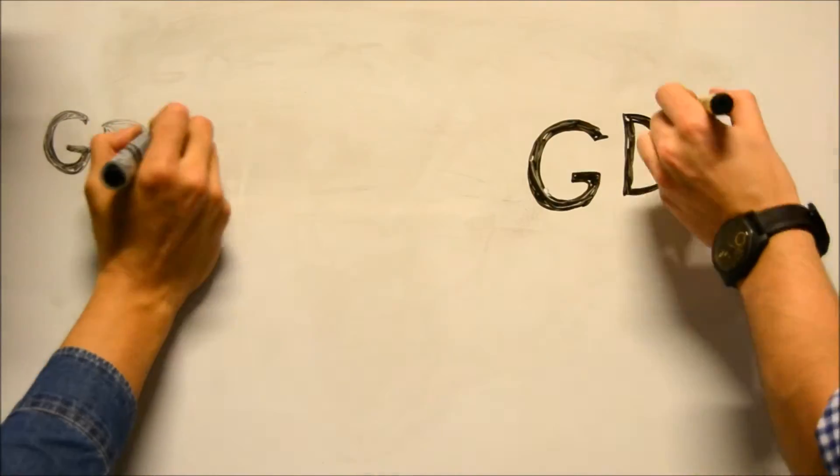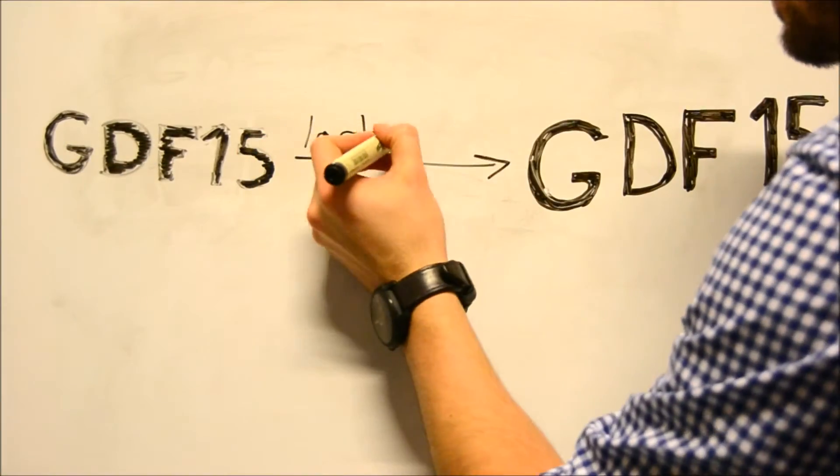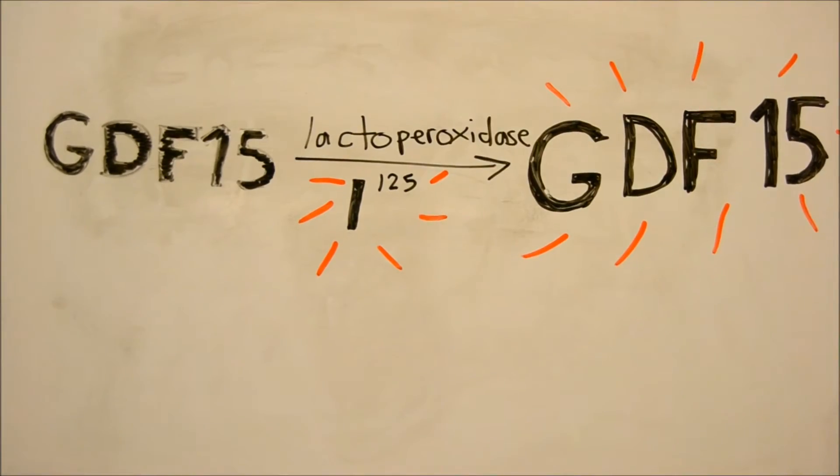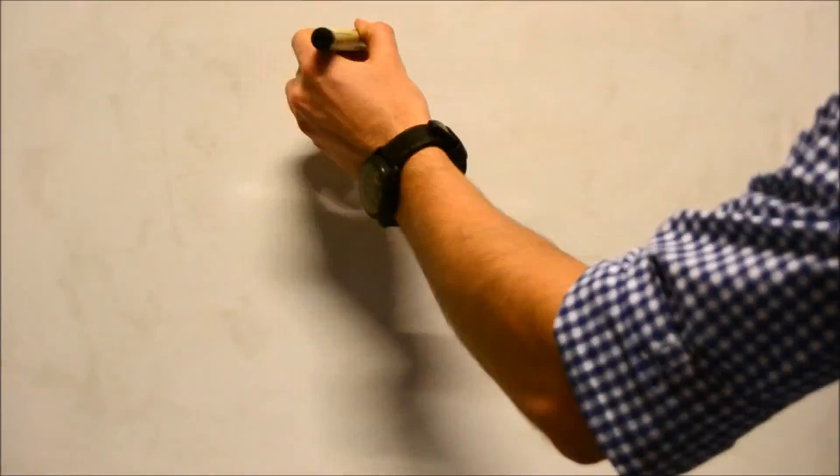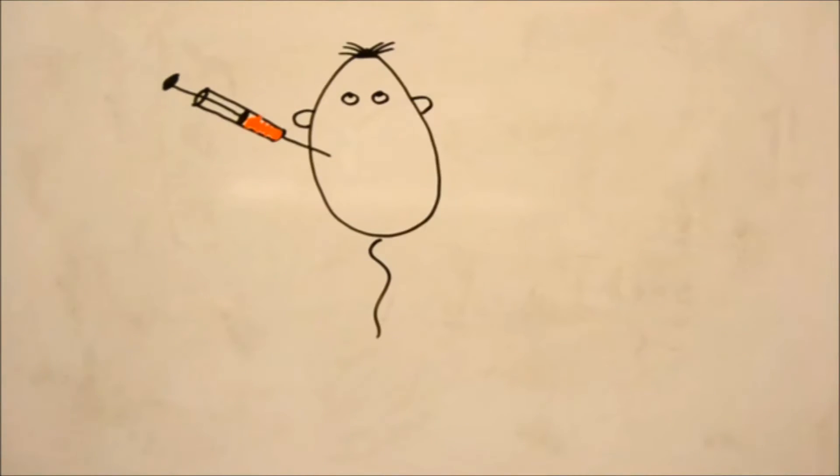For that, we will take the regular GDF-15 and perform the lactoperoxidase reaction, which incorporates radioactive iodine-125 isotopes in the tyrosine residues of GDF-15. Once we have the radio-labeled GDF-15, we will inject it into the mice.